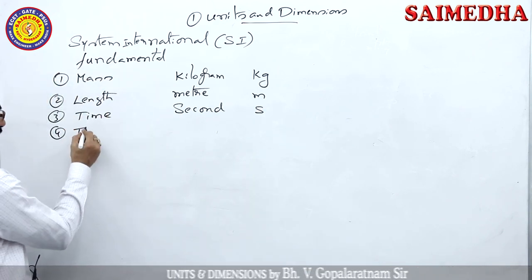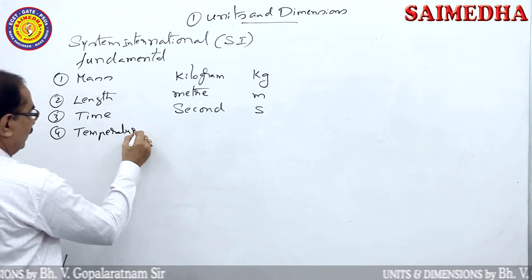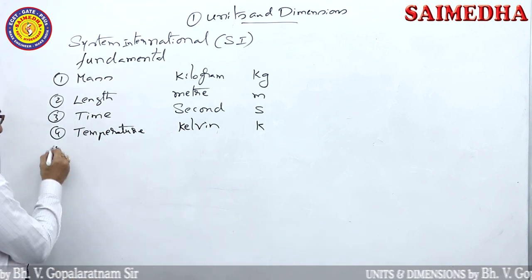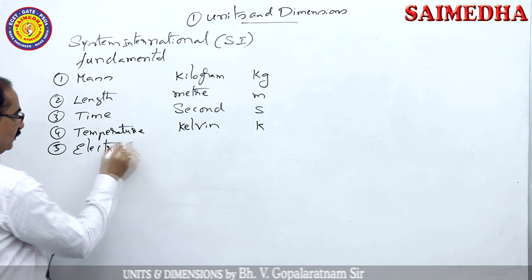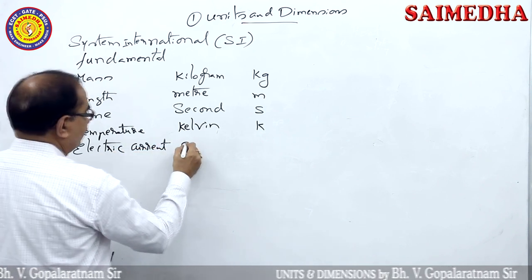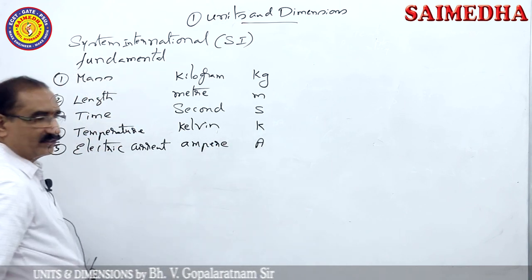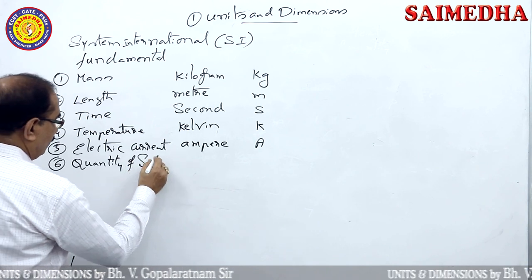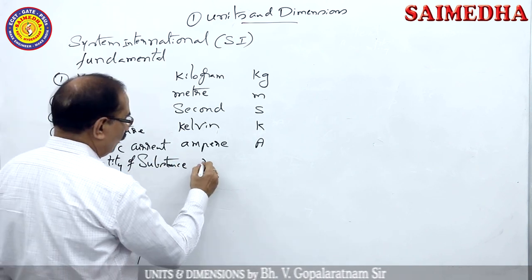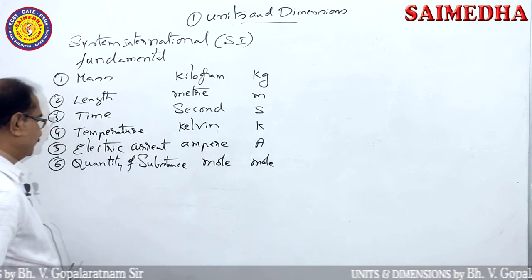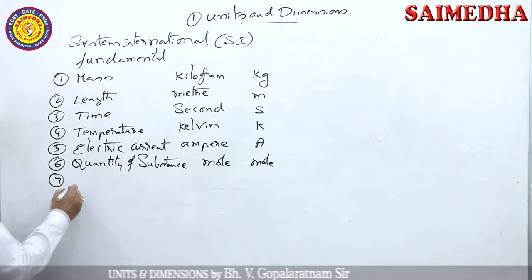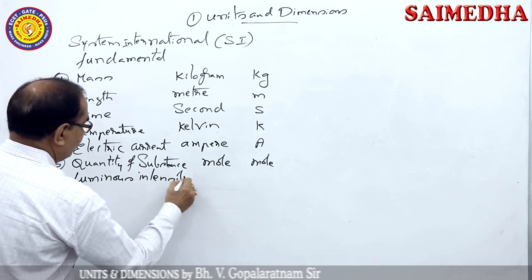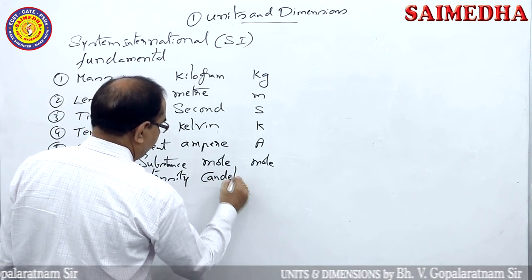The fourth fundamental quantity is thermodynamic temperature — unit: Kelvin, symbol K. The fifth is electric current — unit: Ampere, symbol A. The sixth is quantity of substance — unit: mole, symbol mol. The seventh is luminous intensity — unit: candela, symbol cd.